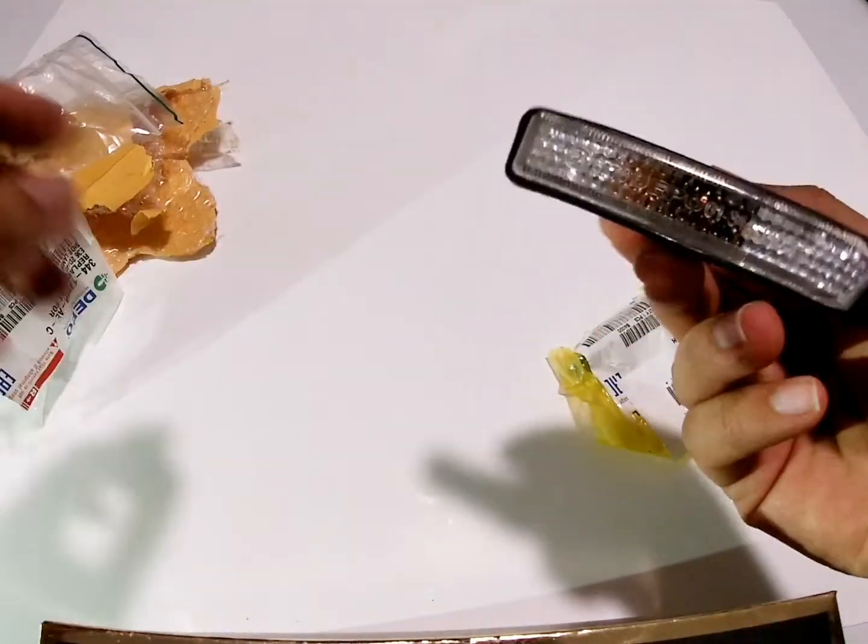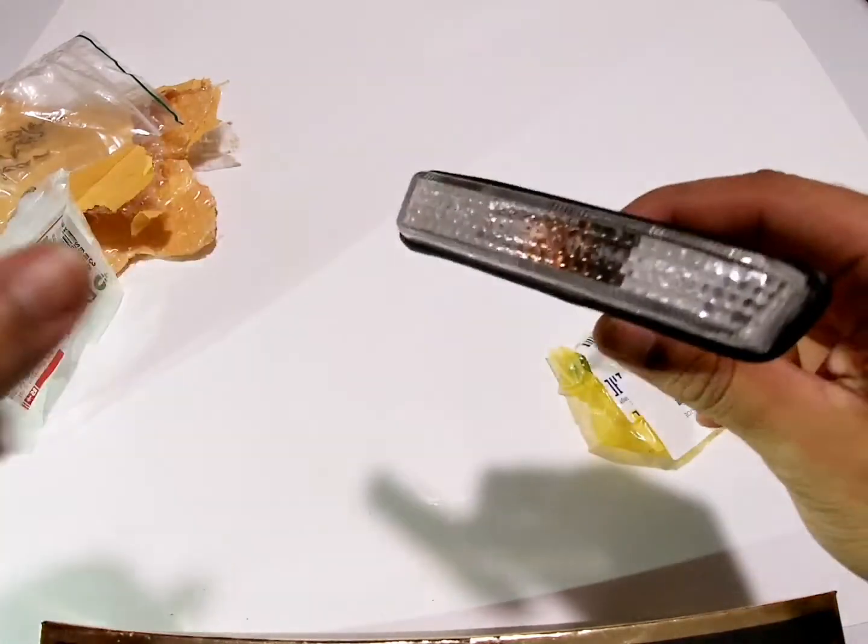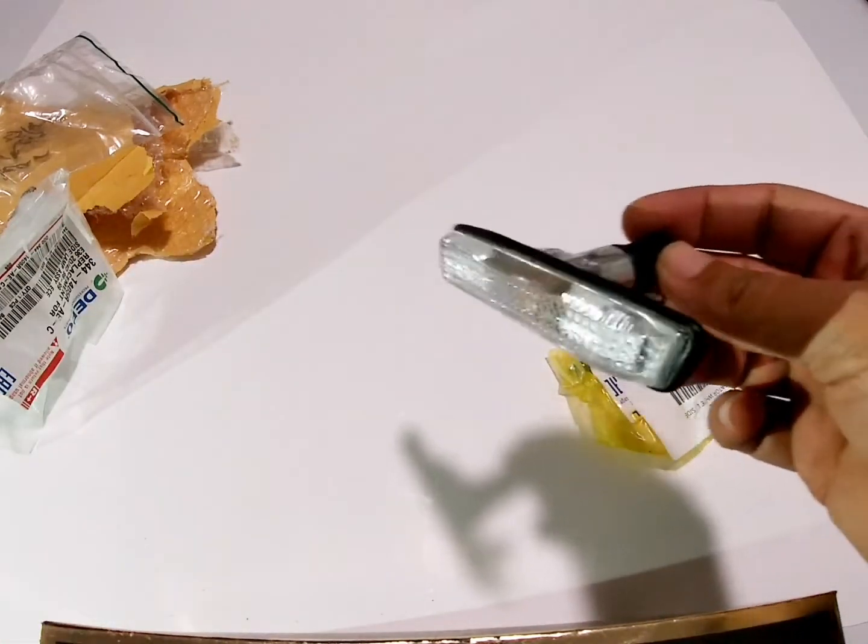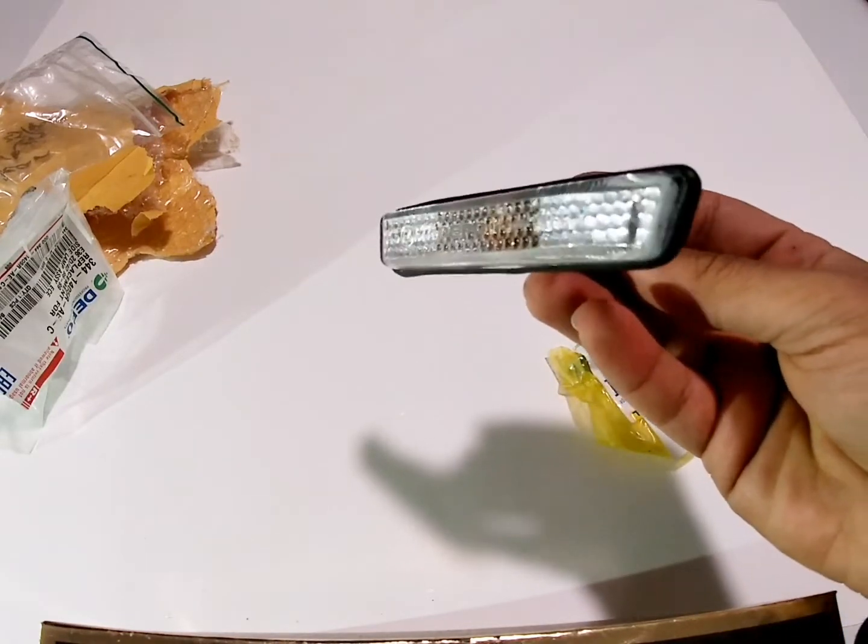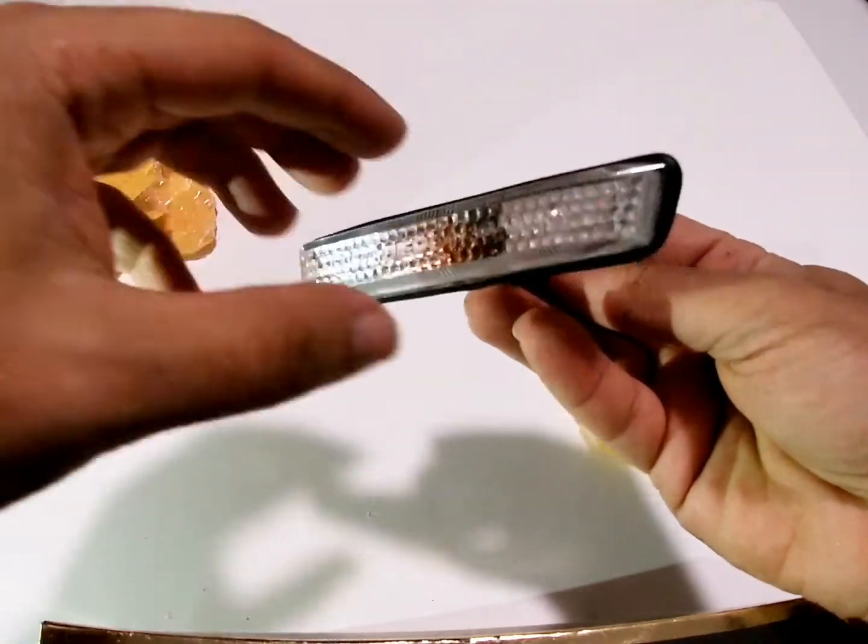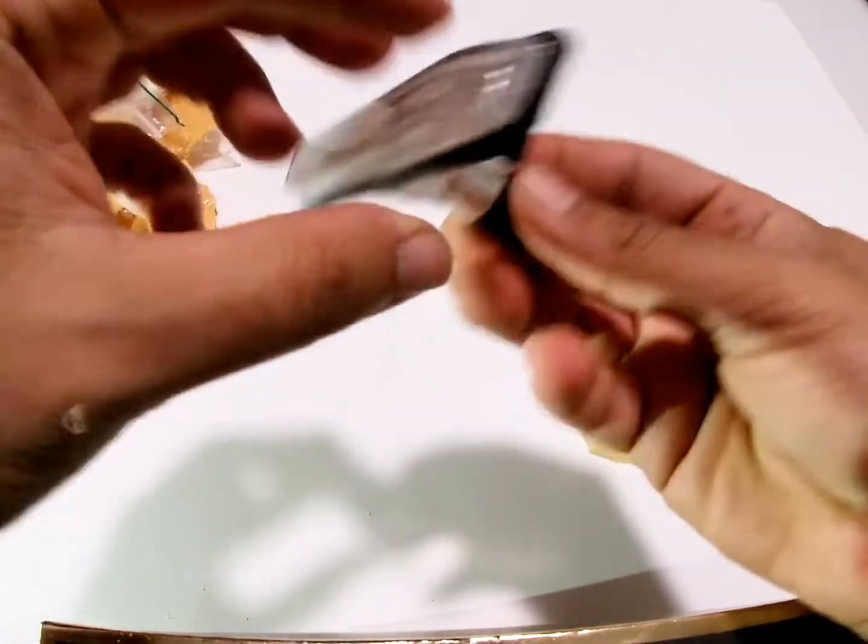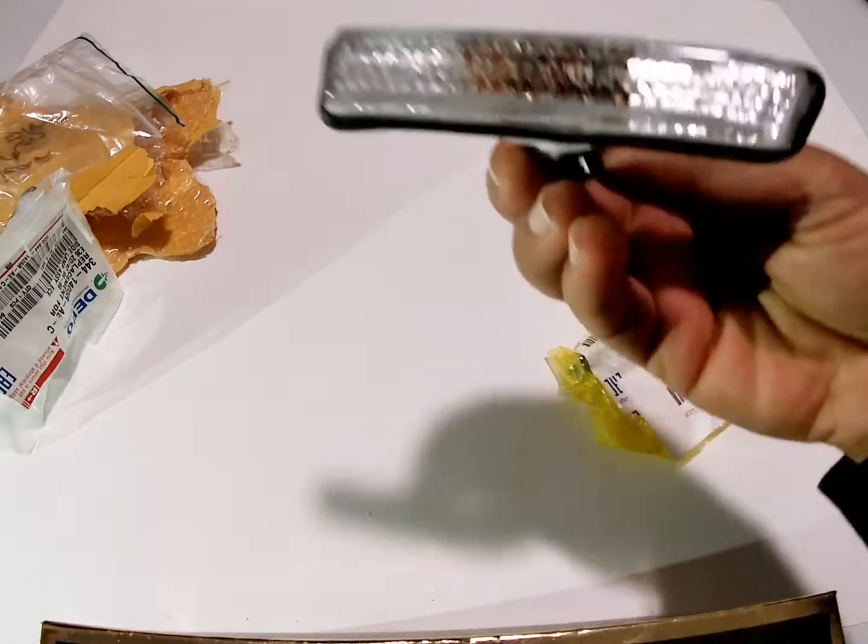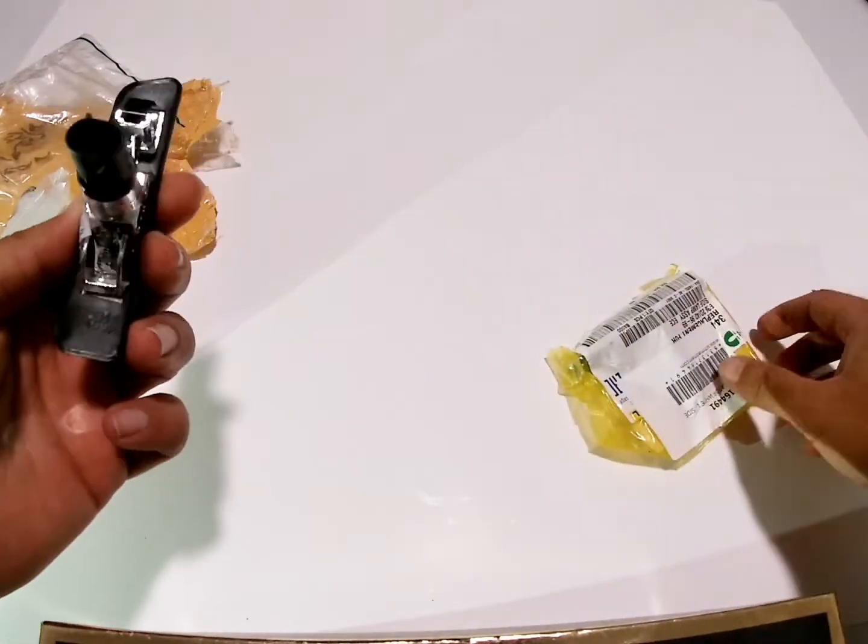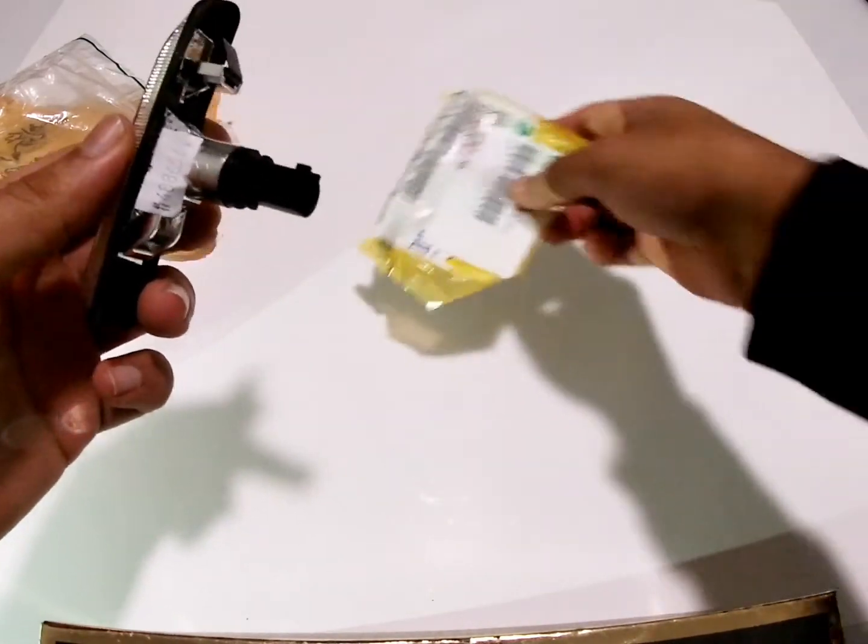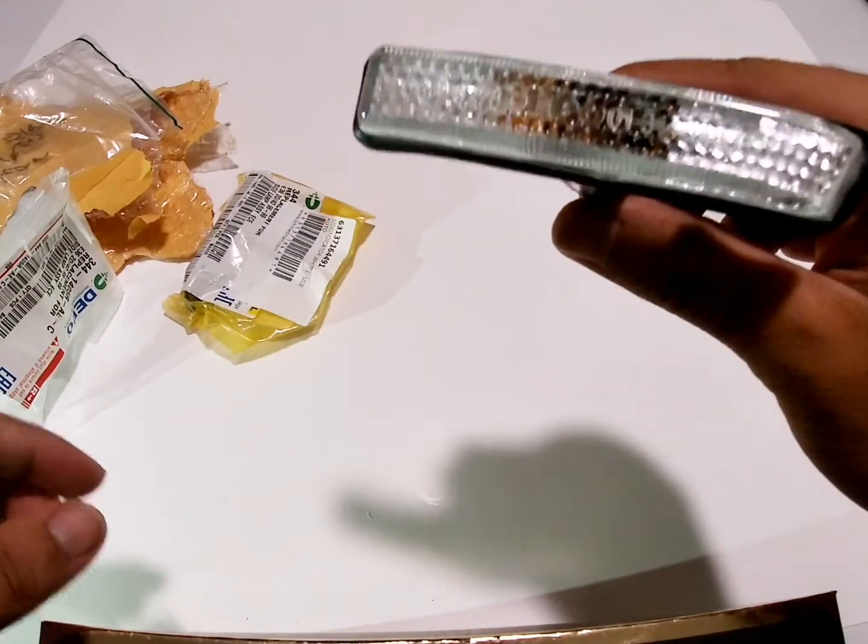They were shipped out recently. These are the new side markers and these are the clear ones. I prefer the clear because I have clear turn signals already on the car, so I'm going to stick with that theme. They come with new rubber gaskets and overall they seem like they're fairly good quality. These are made by Depo as you can see on the lens there, and that's a fairly good company, trustworthy. Here's the other side.